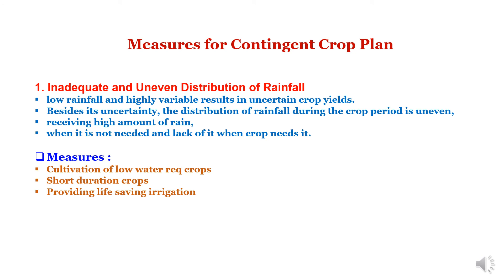Measures for contingent crop planning are categorized on the basis of seven parameters. The first is for inadequate and uneven distribution of rainfall conditions, where low and highly variable rainfall results in uncertain crop yields. The distribution of rainfall during the crop period is also uneven — sometimes high rainfall is received when not needed and sometimes there is a lack of rainfall when badly needed. Measures include cultivation of low water requirement crops, short duration crops to escape shortfall at final stages, and provision for life-saving irrigation in drastic shortfalls.